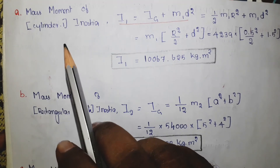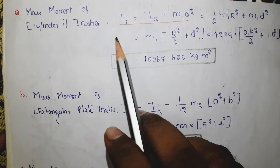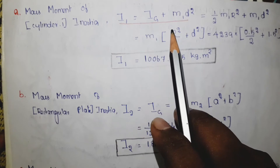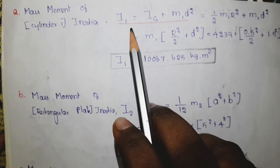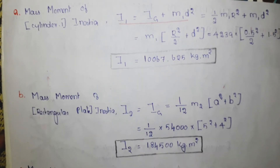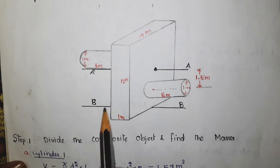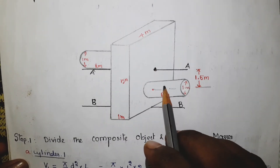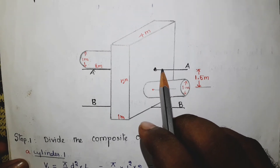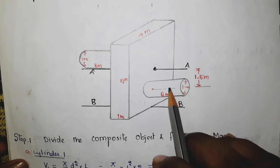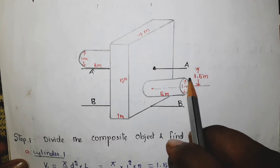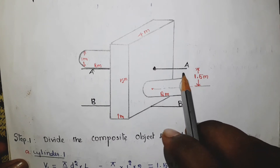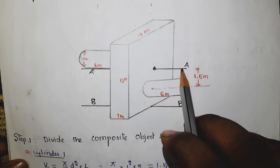For the first object, cylinder one, the mass moment of inertia I1 equals Ig plus m1 times d squared. Here I have used the parallel axis theorem. The reason is: the AA axis passes through the center of gravity of the rectangular plate, not through the center of gravity of this cylinder. We know the moment of inertia about the axis passing through the center of gravity of the cylinder, so we need the parallel axis theorem to find I1 about the AA axis.